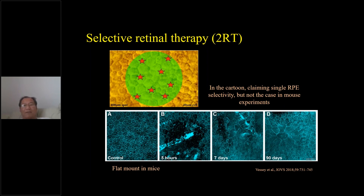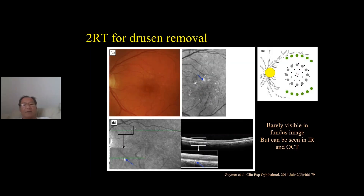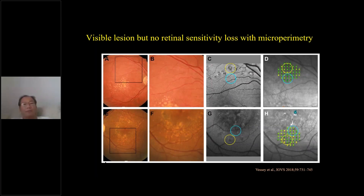I agree that the 2RT laser does not attack the photoreceptor cells on top, which remain intact — that is useful. They discuss drusen removal and claim no scarring, though you can see some RPE changes, so whether you consider that scarring is debatable. Certainly some cells are dying and causing some effect. Because photoreceptors are spared, there is no sensitivity loss on microperimetry. Notably, with micropulse laser there is also no loss in microperimetry sensitivity, and in fact if there was edema, microperimetry actually improved.